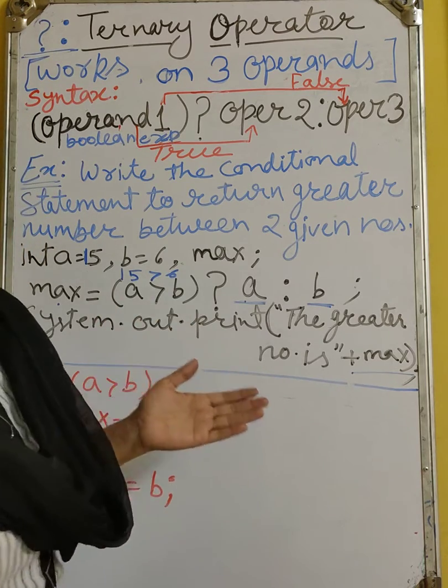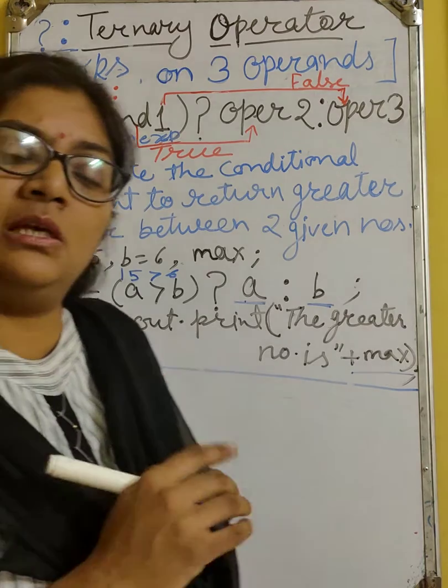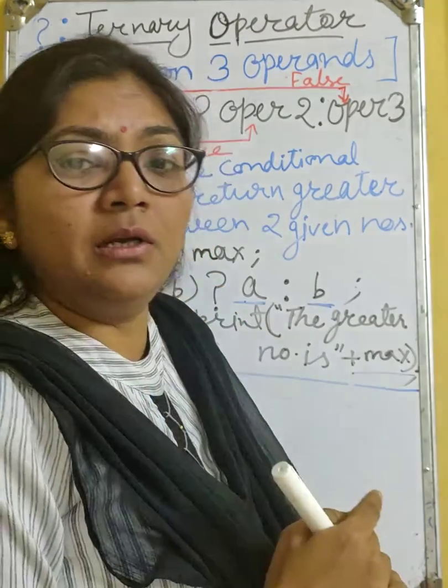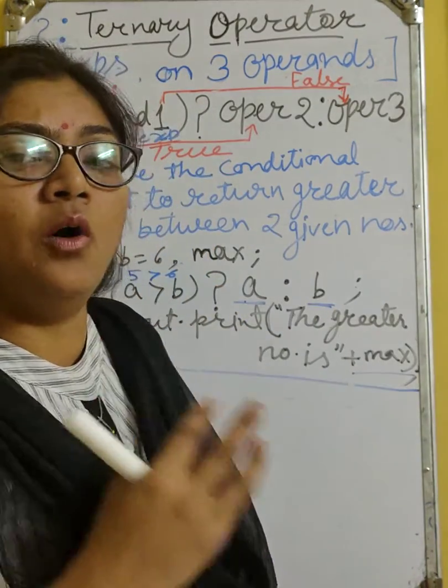As binary operator works on 2 operands, unary operator works on a single operand. Same here, like that, ternary operator works on 3 operands.